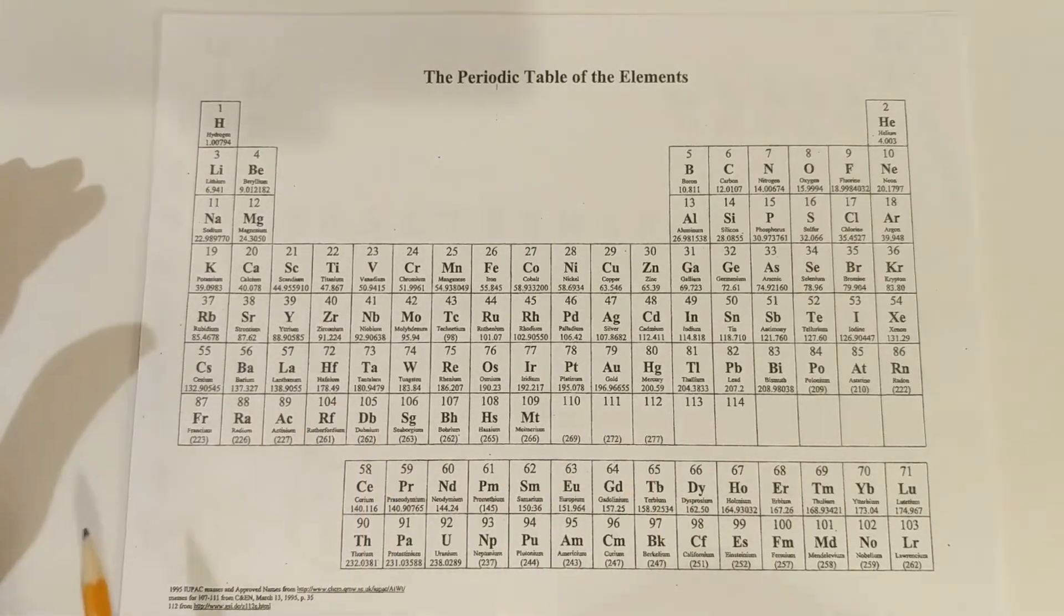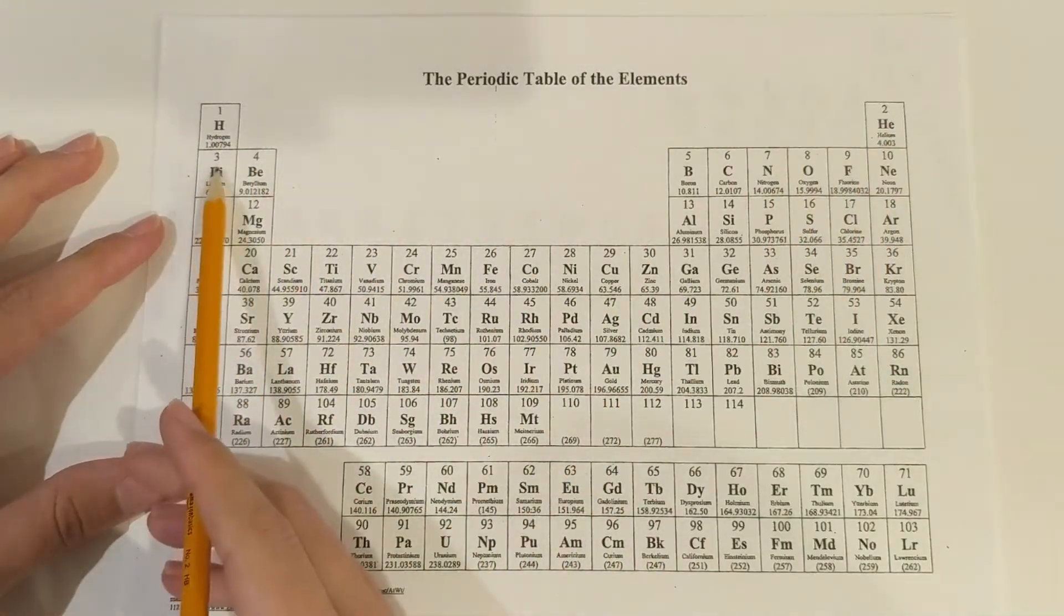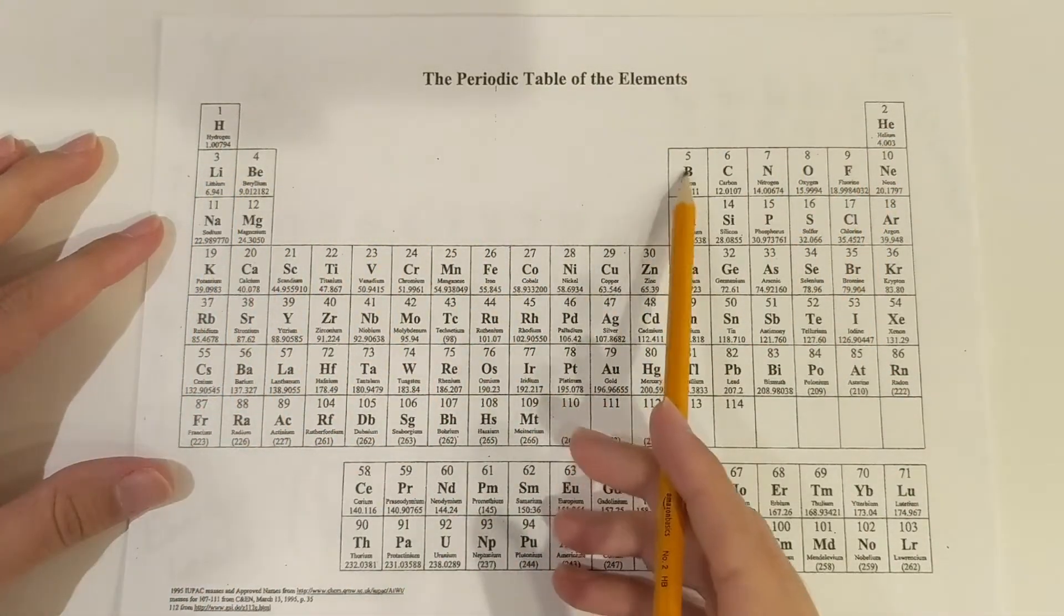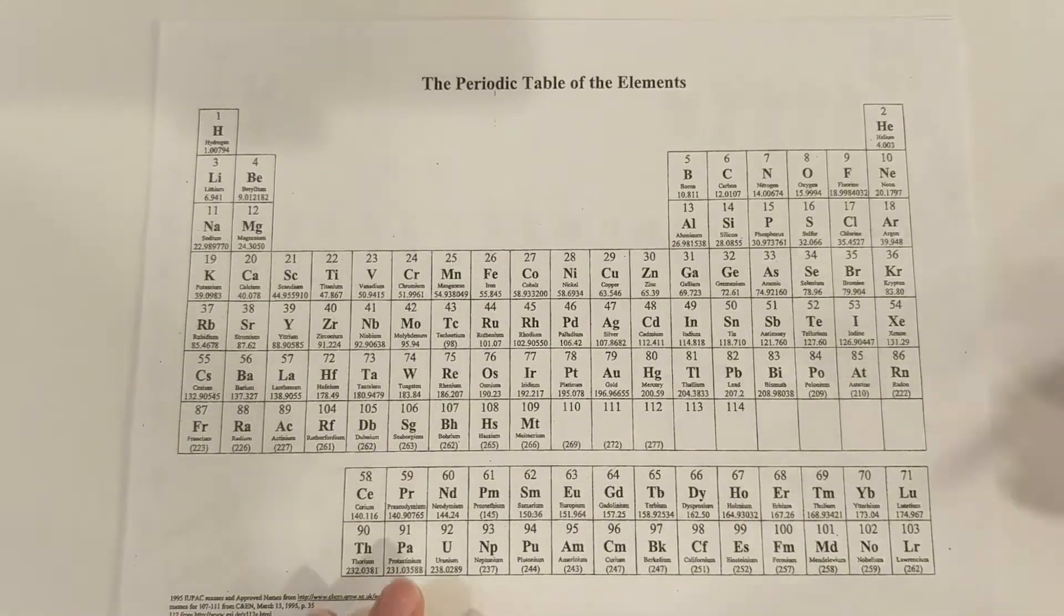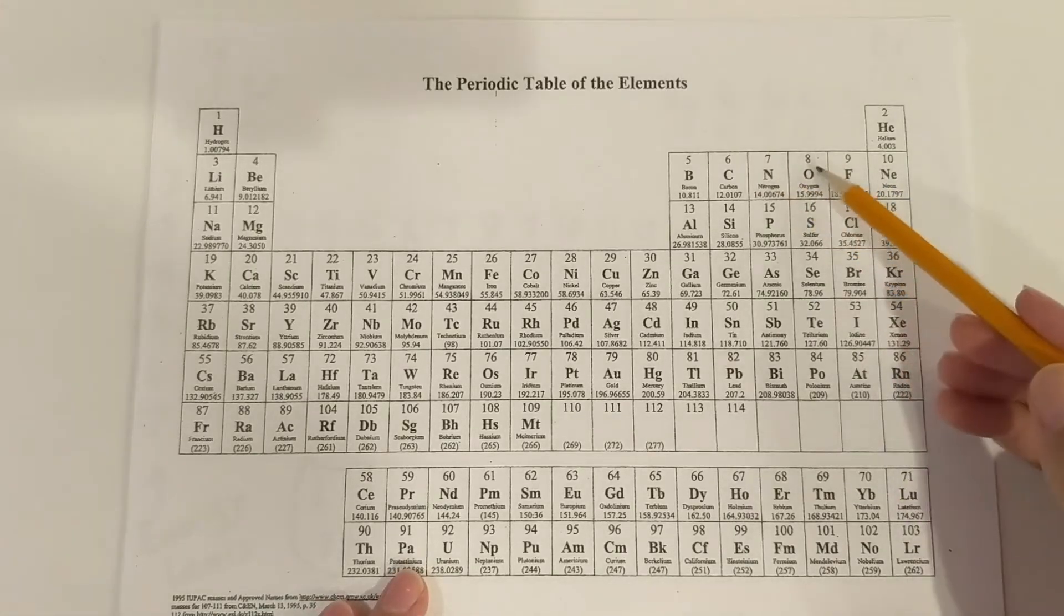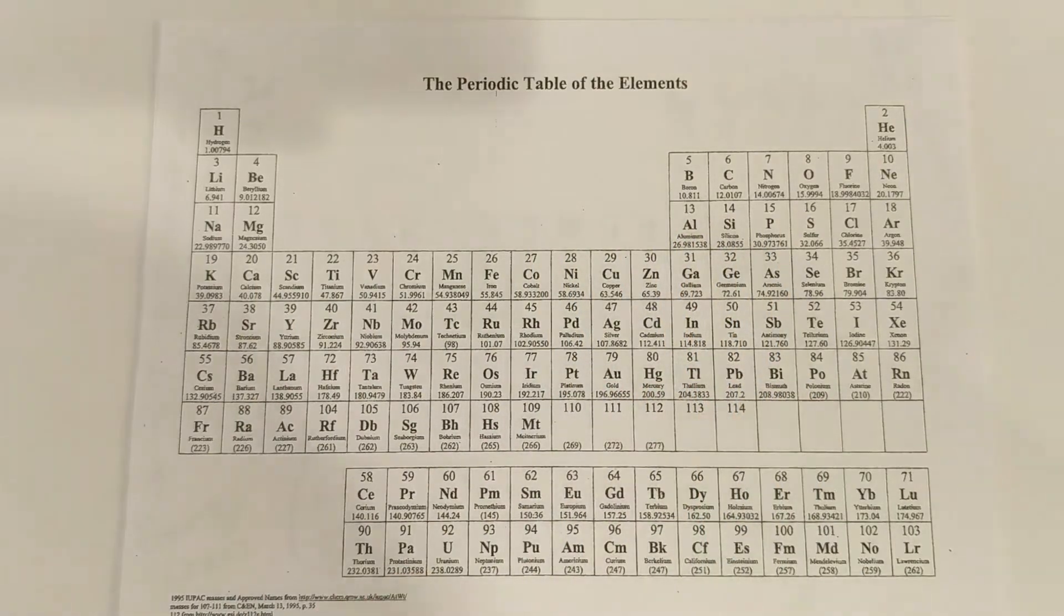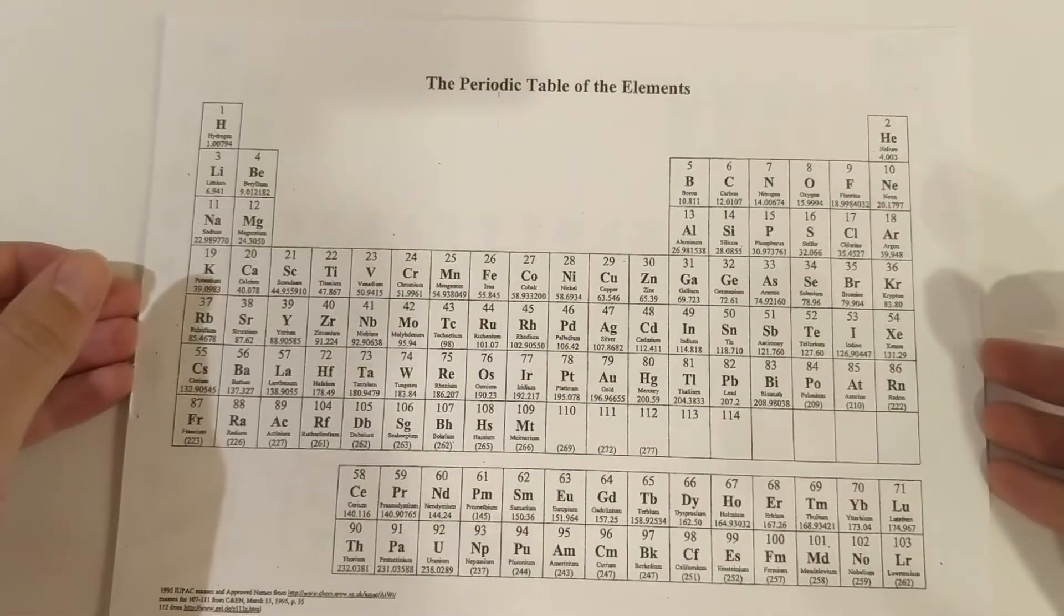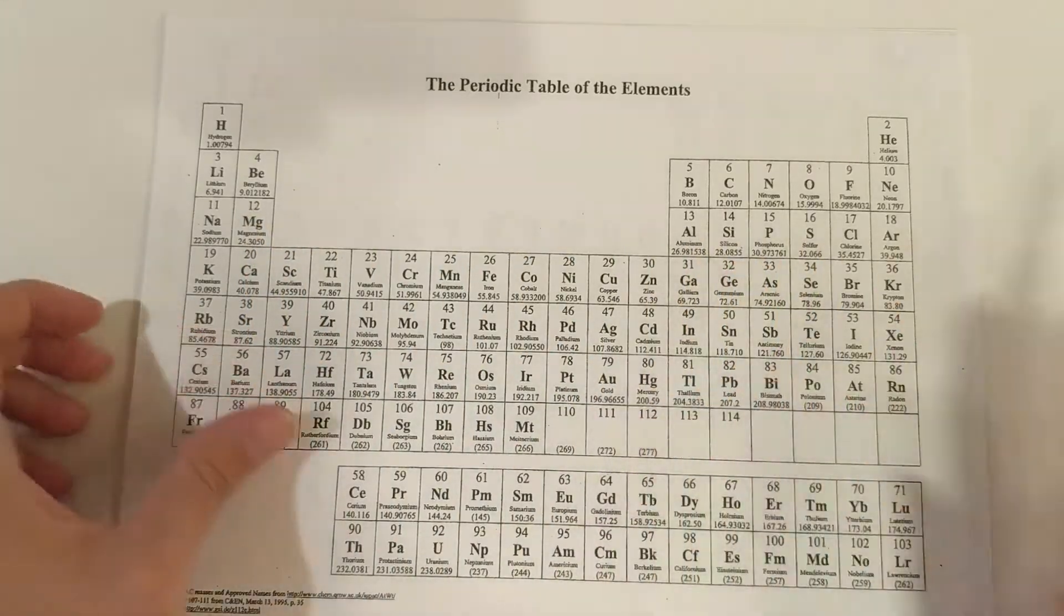So first we're going to look at how the elements are organized. So if you take a look, left to right, top to bottom, the elements are organized by atomic number and that will be how many protons that they have. So you can see nitrogen here is seven, it has seven protons, and then oxygen has eight, fluorine nine, ten, and it just increases because that is the order that our elements are put in by how many protons that they have.